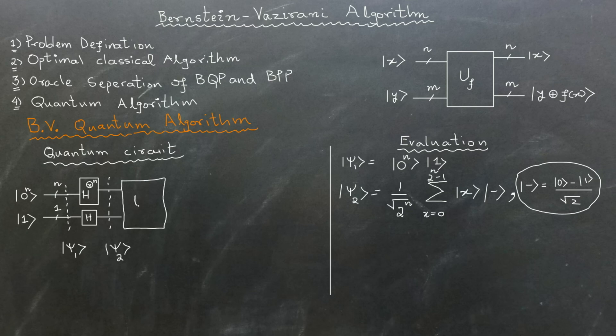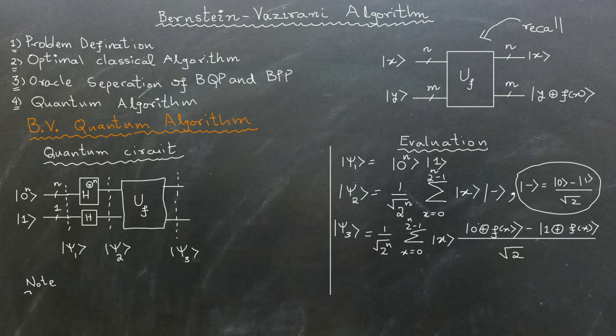We then input this state into the UF gate. Recall the description of UF gate given above. Our output of ket psi 3 will be: the first register remains unchanged while the second register will be ket 0 XOR with f of x minus ket 1 XOR with f of x, divided by square root of 2. Note that f of x XOR 0 is equal to f of x, and f of x XOR with 1 is equal to the complement of f of x.